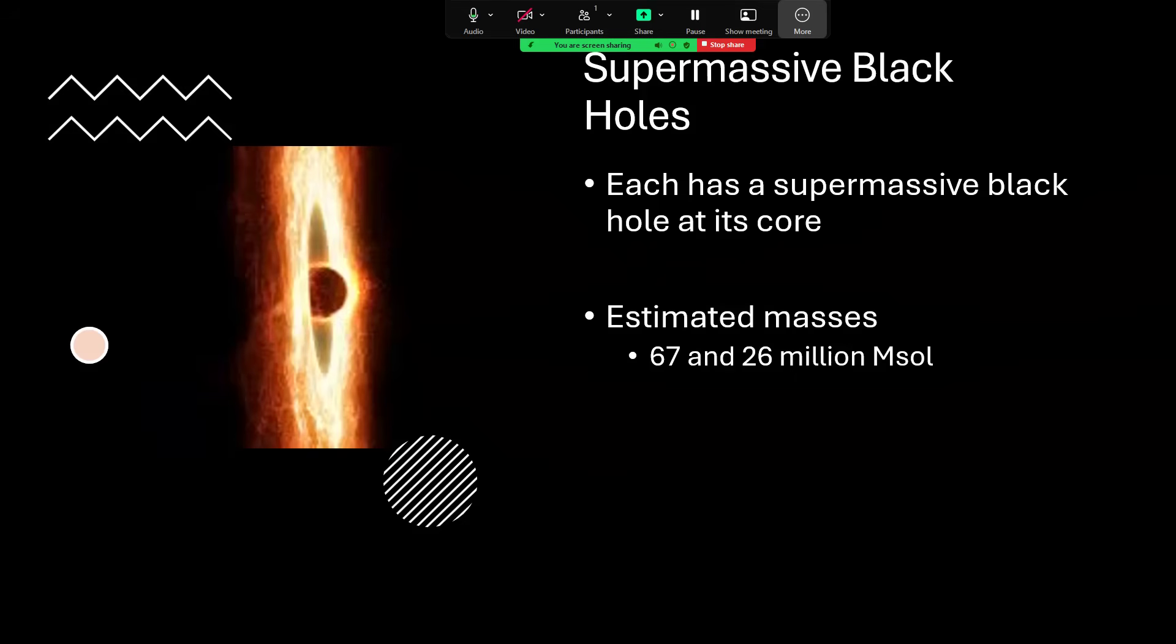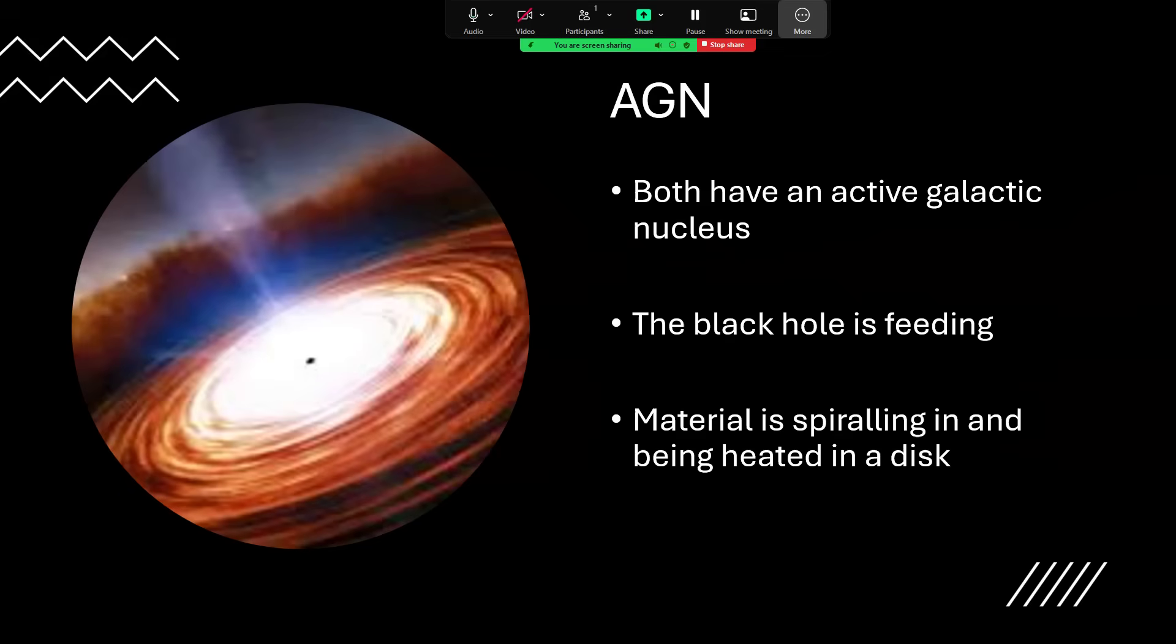In future, not only will the galaxies merge, but it's highly likely that the black holes will find each other and merge together and create an even more massive central object. While they're in this rather chaotic system, there's a lot of gas and dust being hurled around - indeed whole stars being hurled in different directions in the galaxy by all of the shock waves.